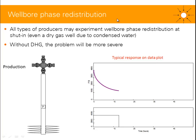So when you perform a shut-in, the heavier fluid is going to fall down in the wellbore and accumulate at the bottom. That will change the density below the gauge over time, so the pressure at the gauge won't be a direct measurement of the pressure at the perforation. It is important to know that all types of producers may experience wellbore phase redistribution at shut-in, even a dry gas well due to condensed water. And without a downhole gauge, the problem will be more severe.